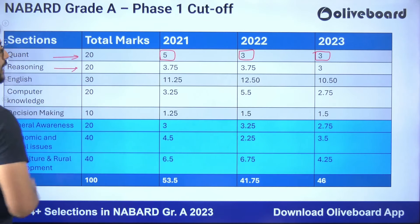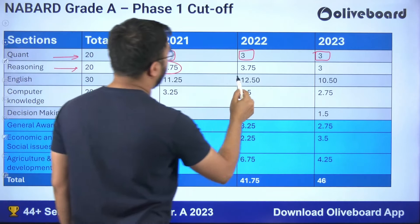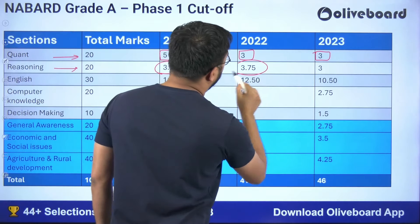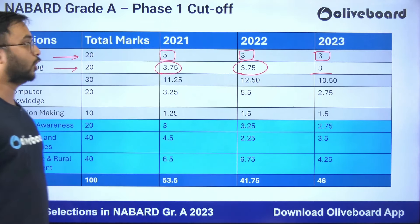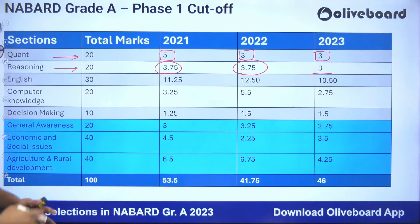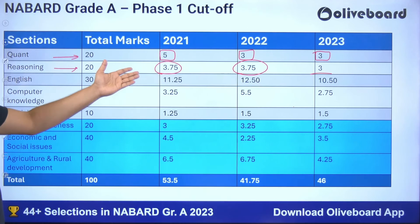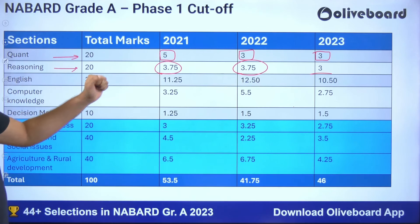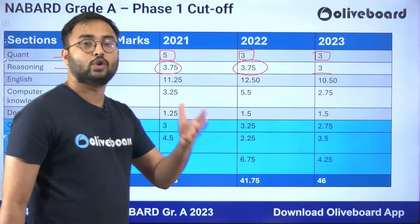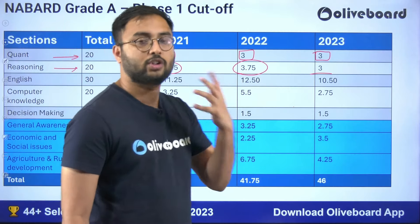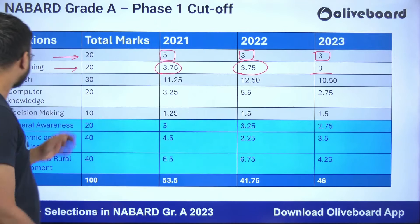For reasoning — similarly 20 marks — the cutoff was 3.75 in 2021, 3.75 in 2022, and 3 in 2023. The range is approximately 3 marks. So you need to solve around 5 to 6 questions in reasoning to clear the cutoff.